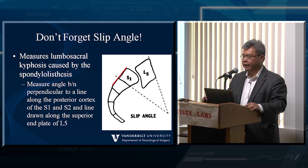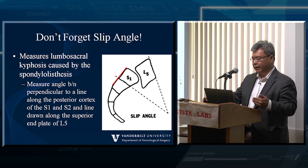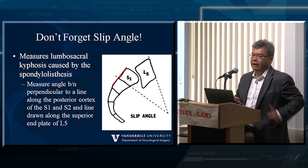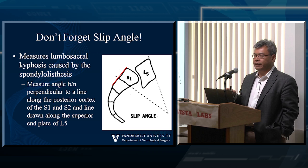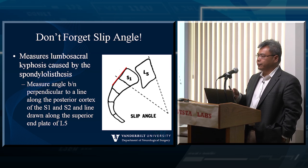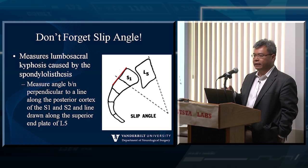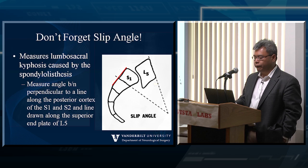There's also a very significant angular component, which we call the slip angle, and that's something you shouldn't forget. You want to measure the lumbosacral kyphosis caused by this, because a slip angle will actually indicate whether or not your hardware or construct is going to be more prone to failure. This is one of the common parameters overlooked in people taking care of spondylolisthesis patients — it doesn't look like a high-grade, maybe a grade 2, but they didn't realize there was a huge slip angle. They do a simple L5-S1 fixation only to find the S1 screws keep loosening or failing.